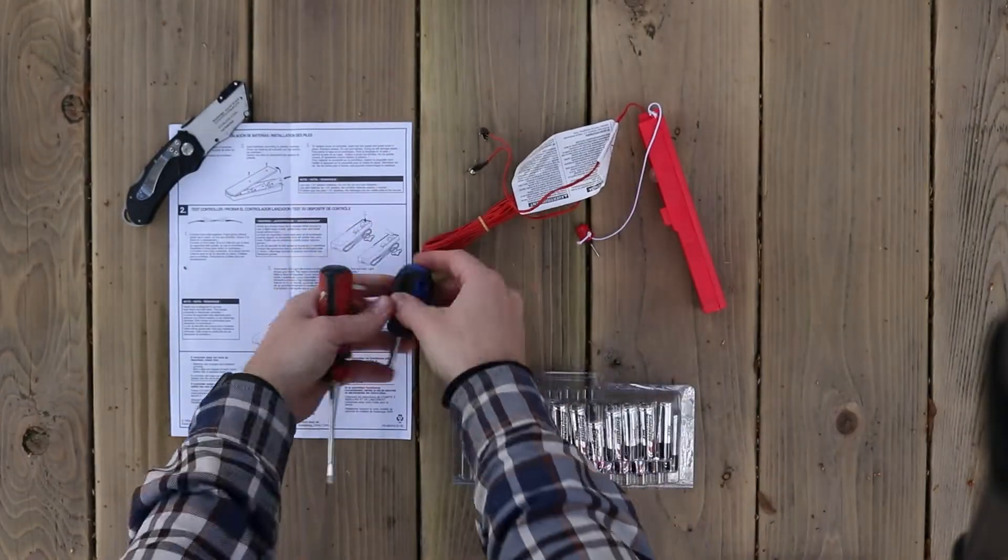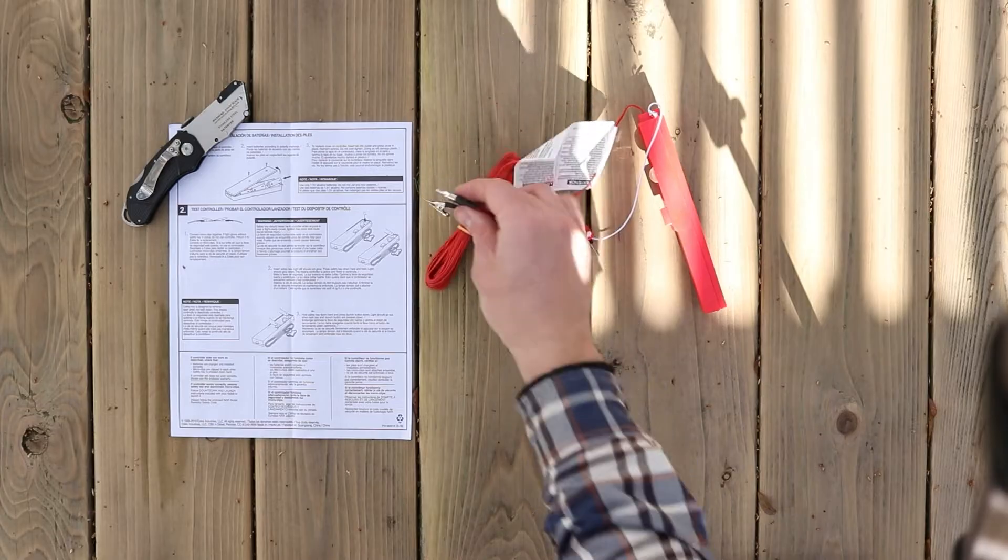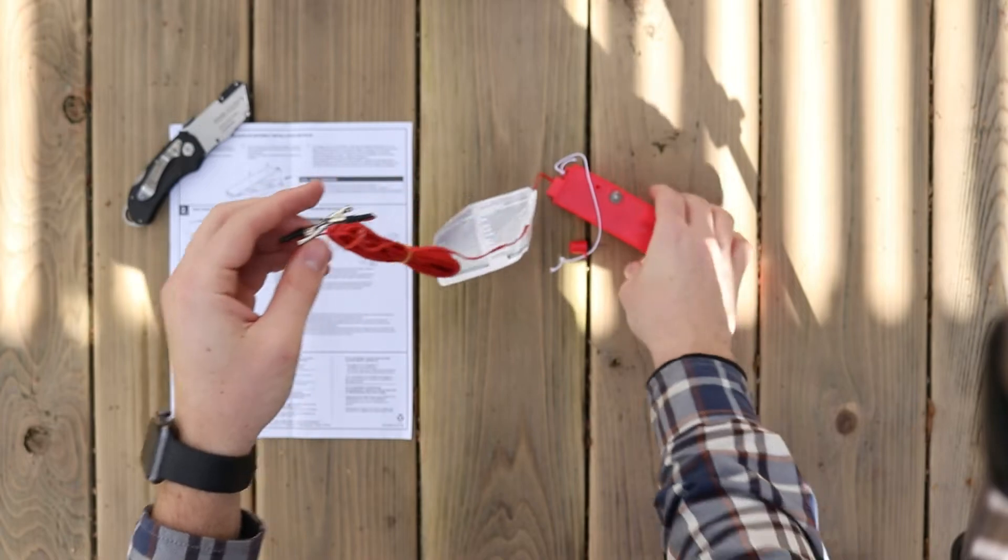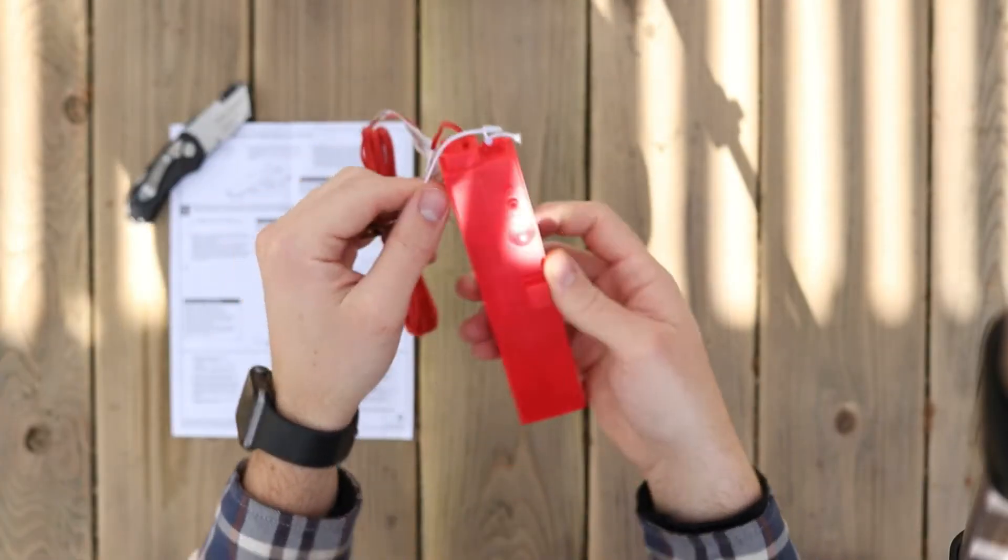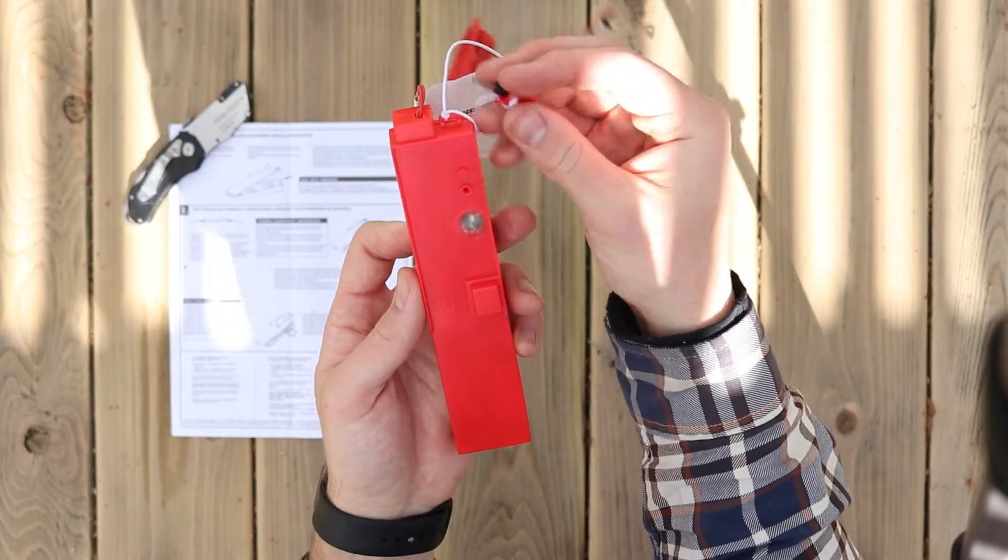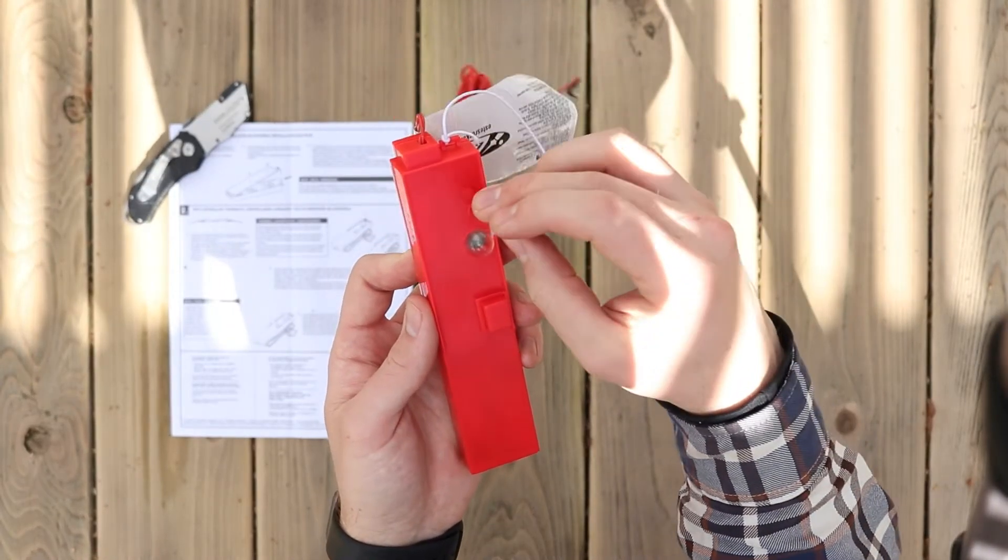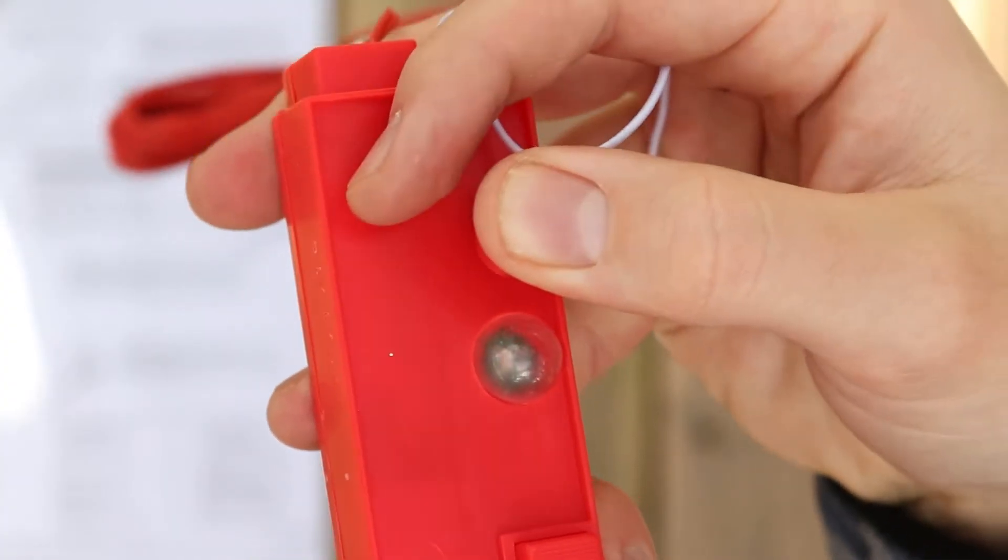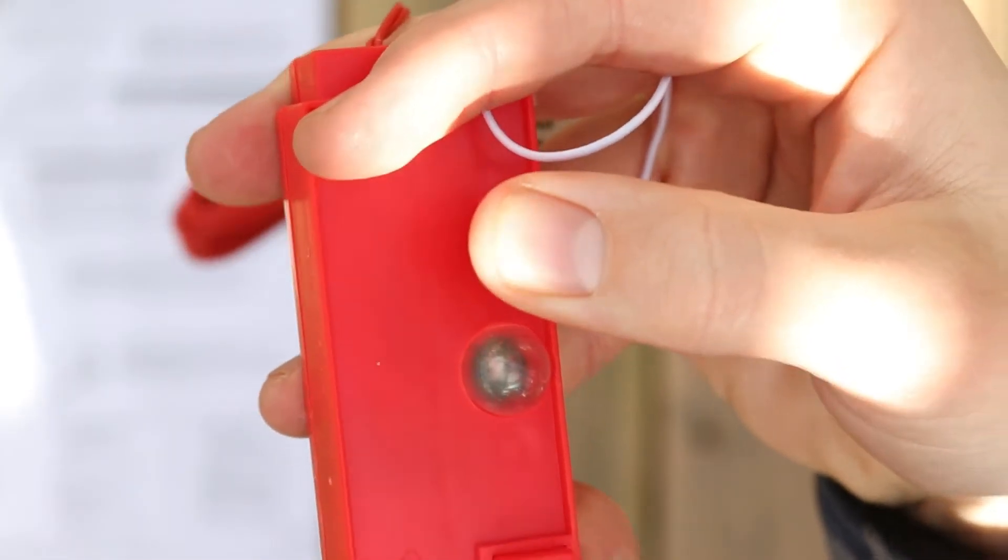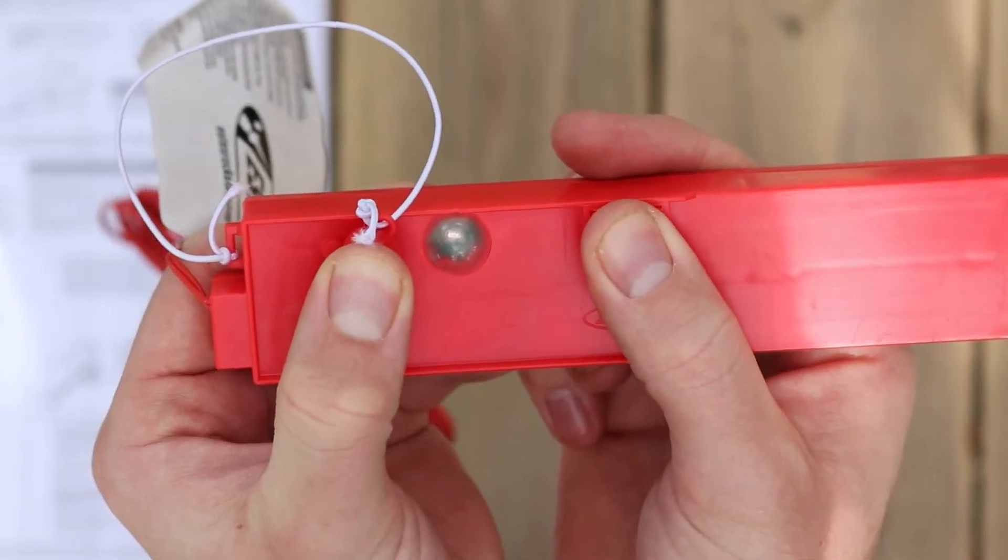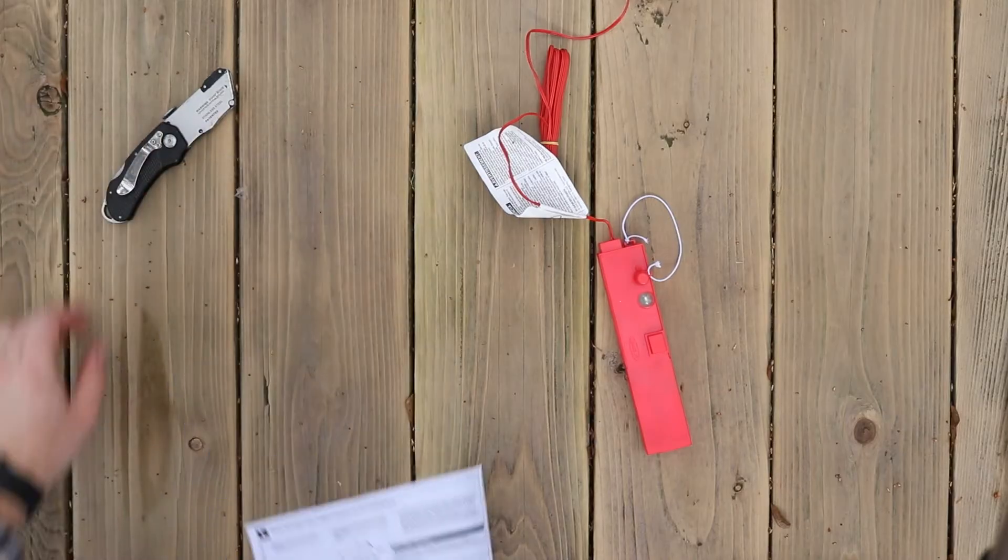Now it's time to do a couple tests to make sure the controller is working 100% correctly. First, connect the two micro clips. With the key out, the light should stay off like this. If your light glows, even with the safety key out, it's broken, and you'll need to return it to Estes for a replacement. Next, insert the key, but don't push down. The light should remain off. Now push down hard on the key, and the light should glow, like this. For the last test, hold down hard on the safety key and push the launch button down. The light should go out when both key and launch pad buttons are pressed down. And if the controller passed all those tests, it is good to go.